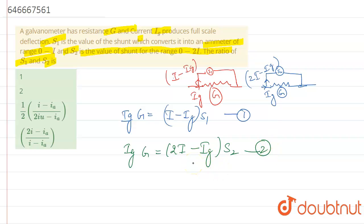Now what is the ratio of S1 and S2? Let's find the S1. Here you will get the value of S1 is equals to IG G upon I minus IG, and